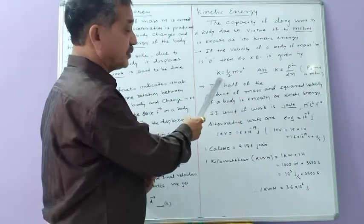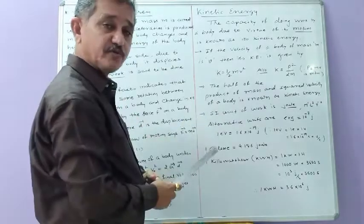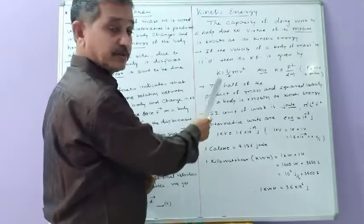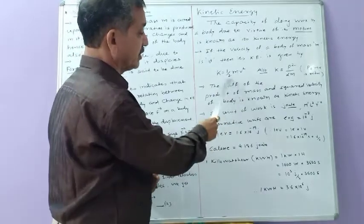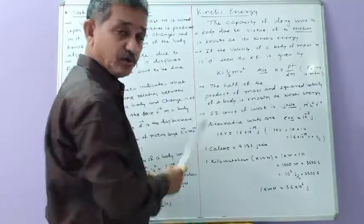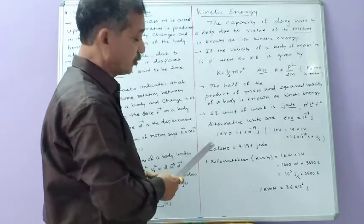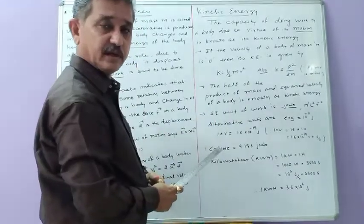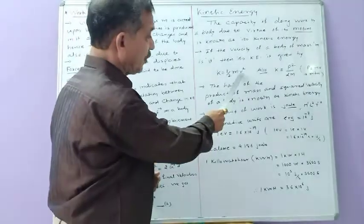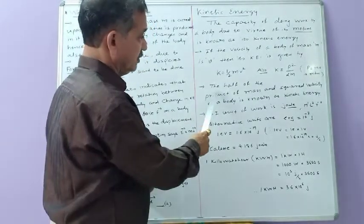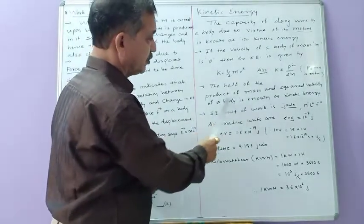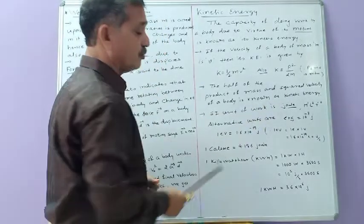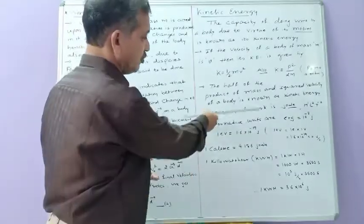From this expression you can also define kinetic energy as: the half of the product of mass and squared velocity of a body is known as kinetic energy.